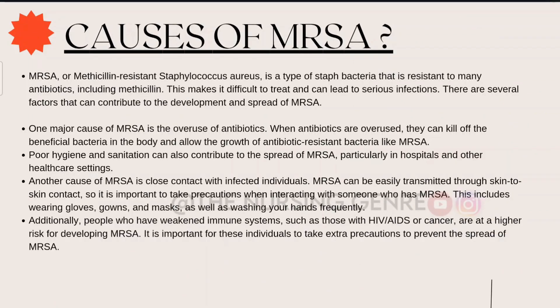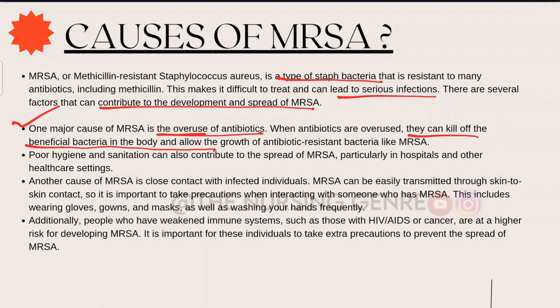MRSA is a type of Staphylococcus bacteria resistant to many antibiotics including methicillin, making it difficult to treat. One major cause is the overuse of antibiotics. When antibiotics are overused, they can kill off beneficial bacteria in the body and allow antibiotic-resistant bacteria like MRSA to grow.